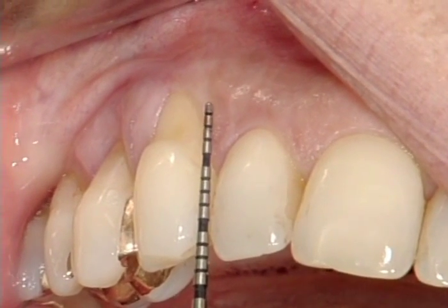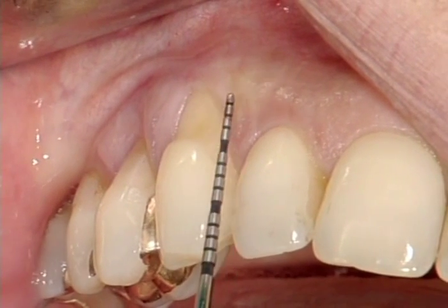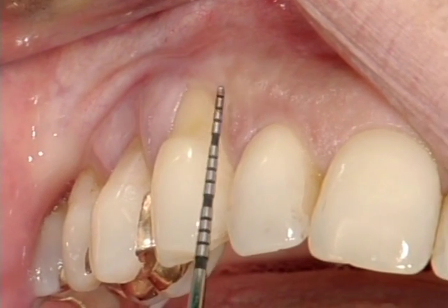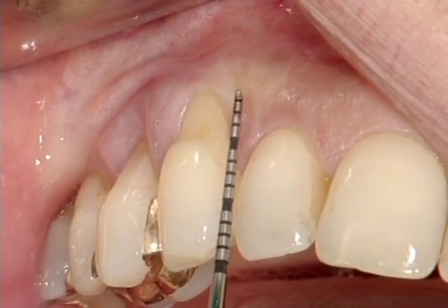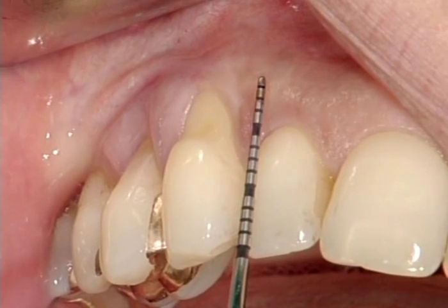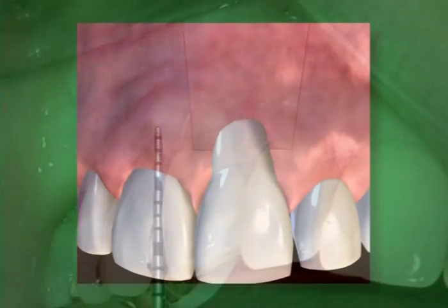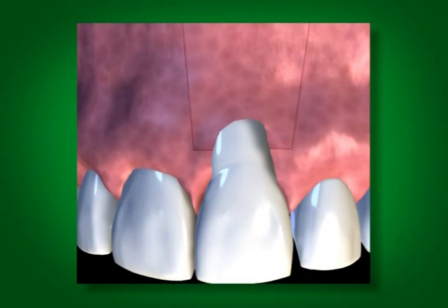The distance of the horizontal incisions to the CEJ is defined by the length of the defect. For optimal soft tissue healing, correct flap design, as shown in this illustration, is important.